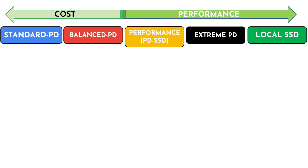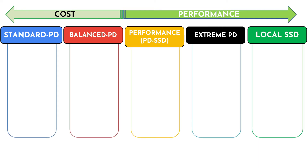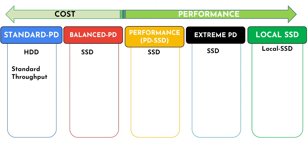Compute Engine offers several types of storage options for your instance based on your performance and pricing requirements. We have five different options to select from. The first is standard persistent disk, which is backed by a standard hard disk drive (HDD) and is lower in performance. The rest four are backed by SSD, which is a solid state drive and is high in performance. Because standard persistent disk is backed by HDD, it is recommended for workloads that require standard throughput. Balanced persistent disk provides a balance of cost and performance and offers the lowest cost per GB.